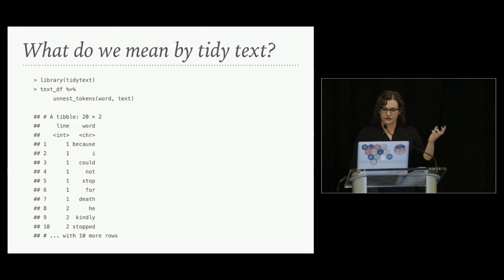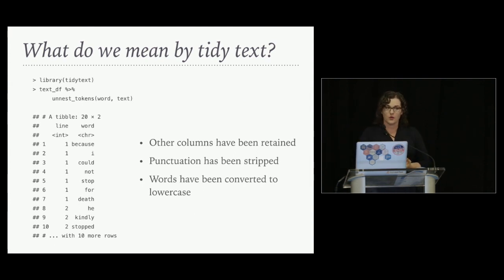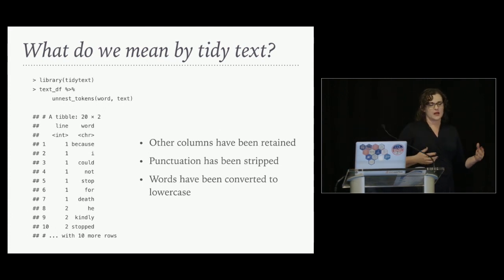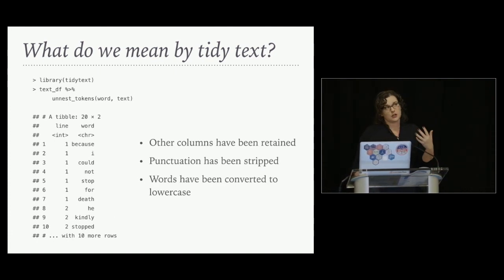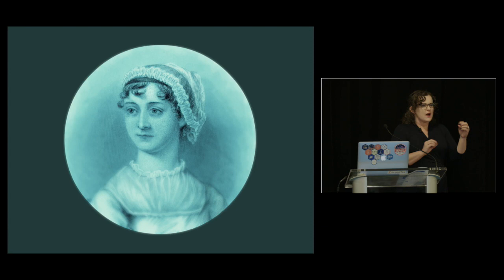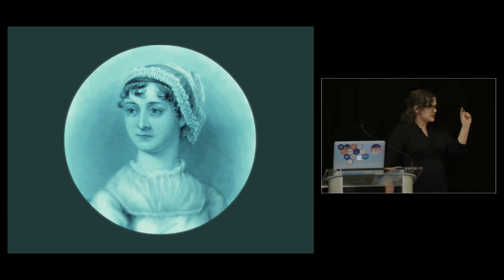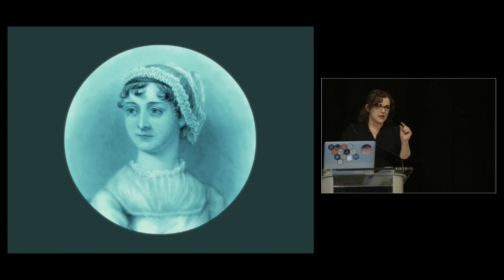Notice a few things here. We still have that other column — we still know which line of the poem each word came from — and we got rid of punctuation, and the words were converted to lowercase. These are the defaults in that function, and that's often a useful choice for analysis moving forward. That was a little bit of text just to walk you through what we mean by a tidy data structure for text.